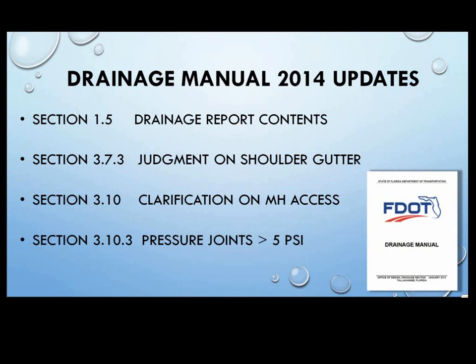We've added a section on judgment for shoulder gutters. Shoulder gutters are required on the high side of a superelevation because there is pavement sloping away, but sometimes that shoulder gutter isn't needed. Just like all drainage, there's a subjectivity to it. We don't want autopilot design. If you have a slope that you feel is erosion-resistant, perhaps even has a history of not having problems, discuss that with the district drainage engineer. He or she will confirm or reject your consideration. We want to think about what we're doing and be frugal with our state dollars.